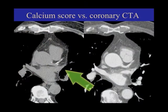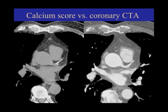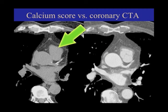This is a calcium score CT. This is a coronary CT. Notice the difference between these two images — what is very white over there that's not white here? Blood vessels, right? We're injecting contrast into the veins.